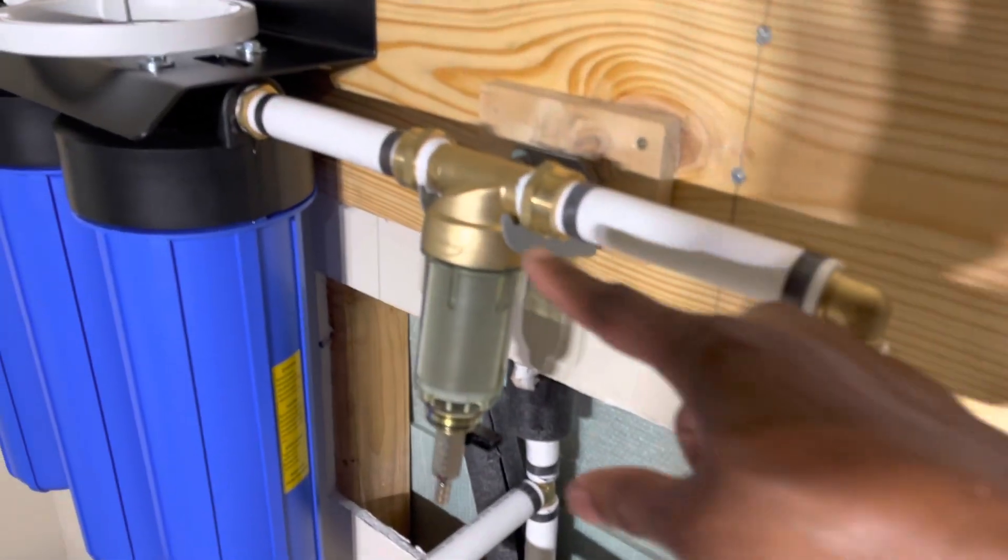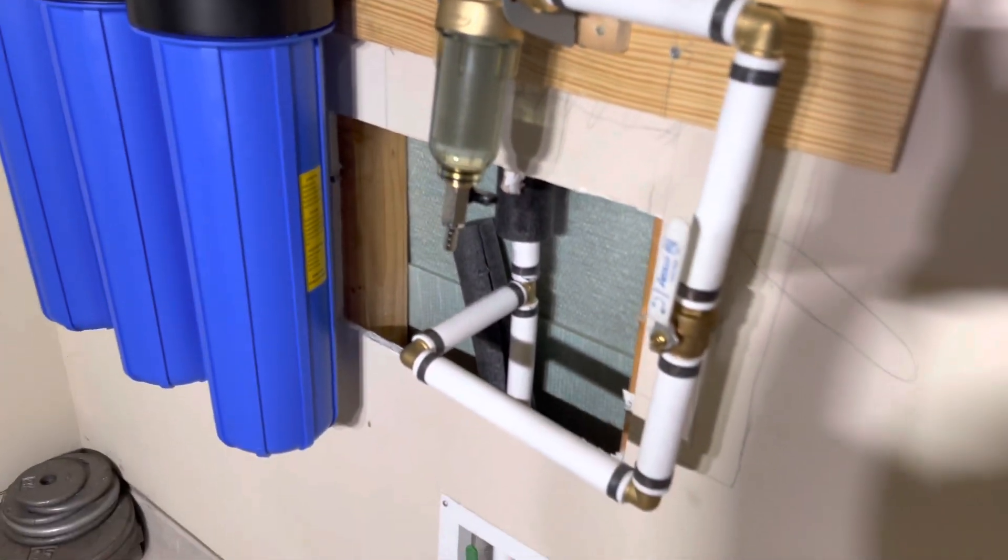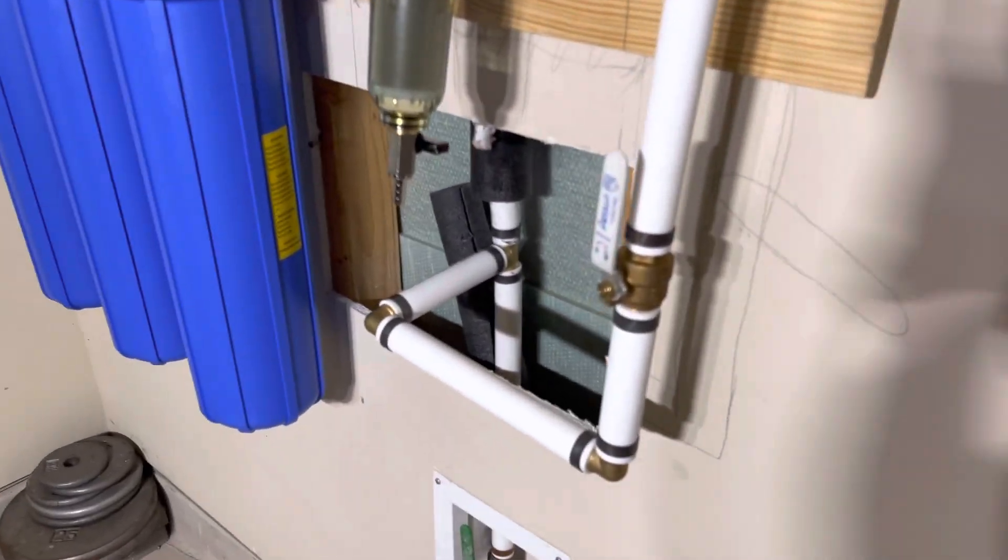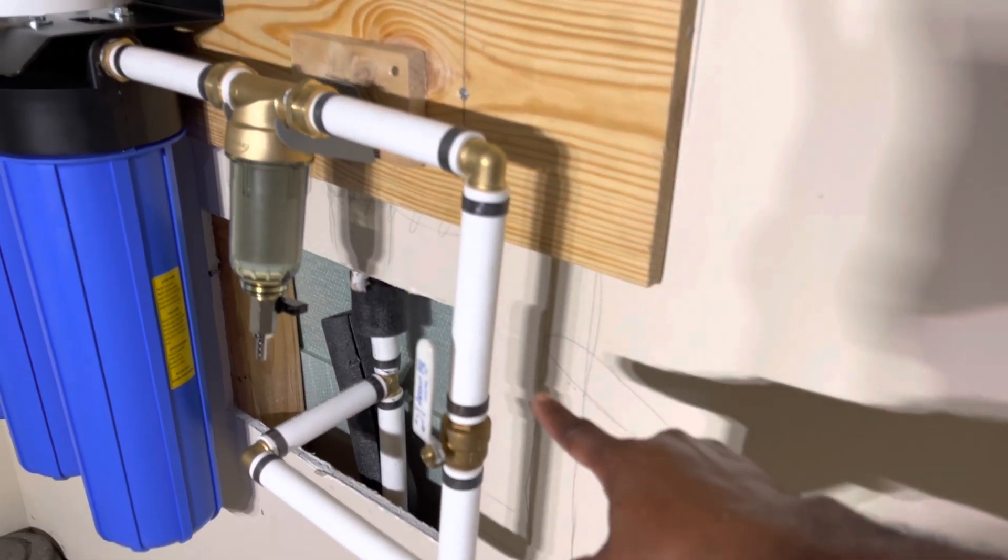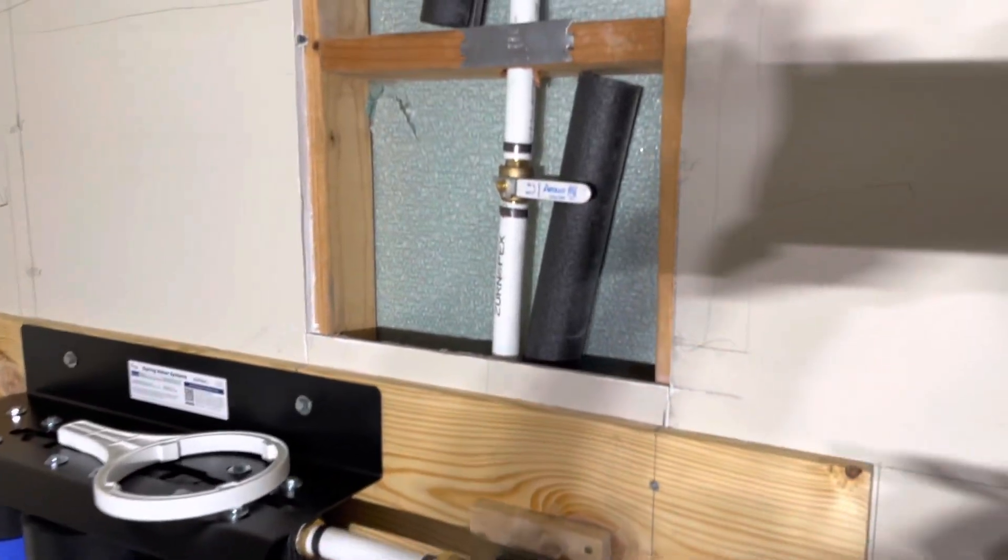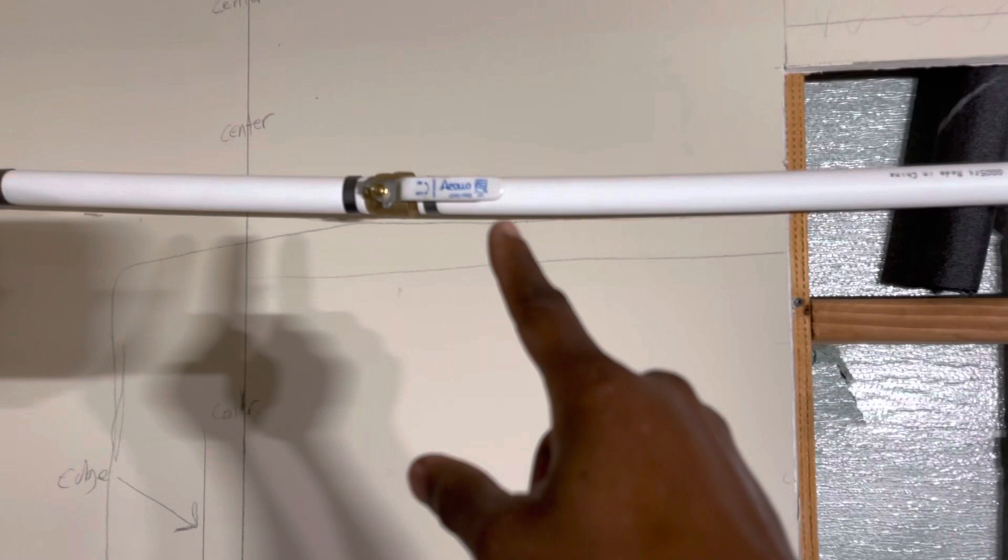And I installed the spin-out filter for the larger particles, and I have the bypass valves - one right there, one right there, and one right there.